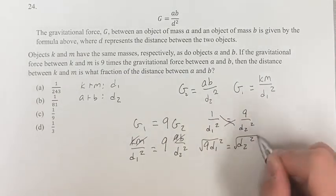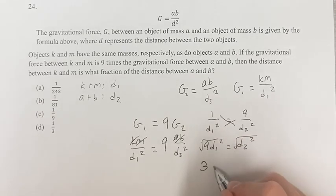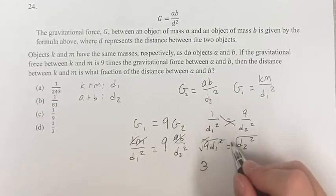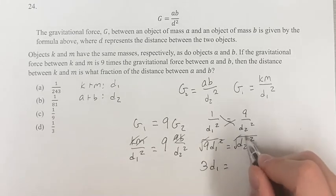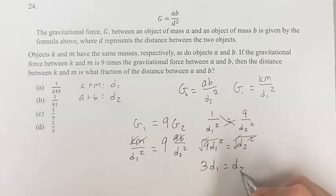And if we take the square root of both sides, the square root of nine is three, D1 squared, the square root of that, the square root of something squared is just the thing itself, which is D1, is equal to D2.